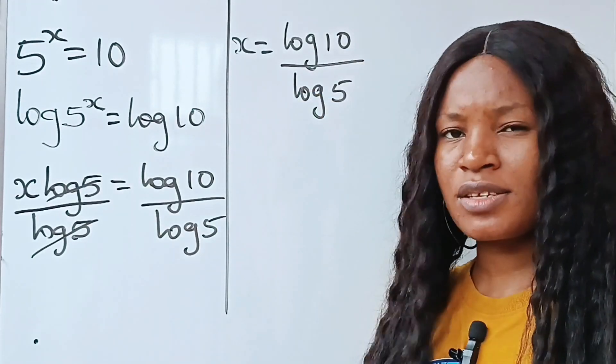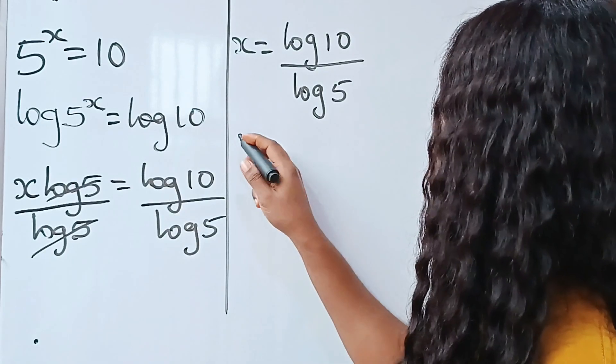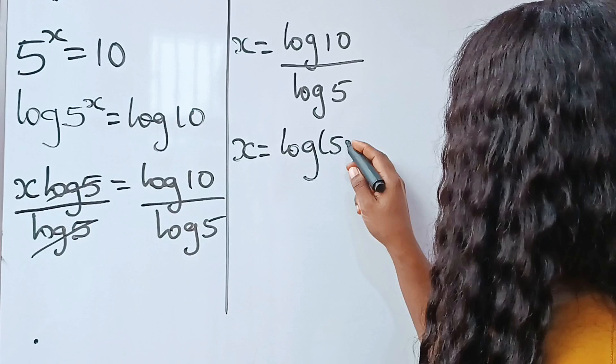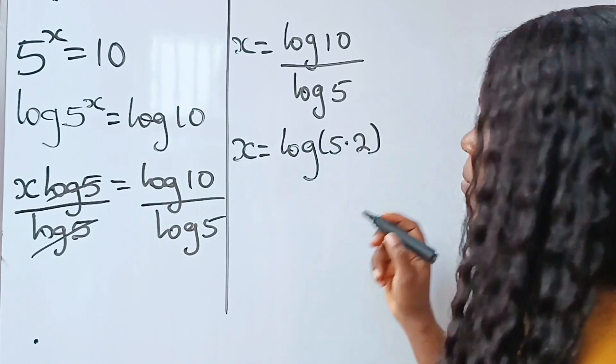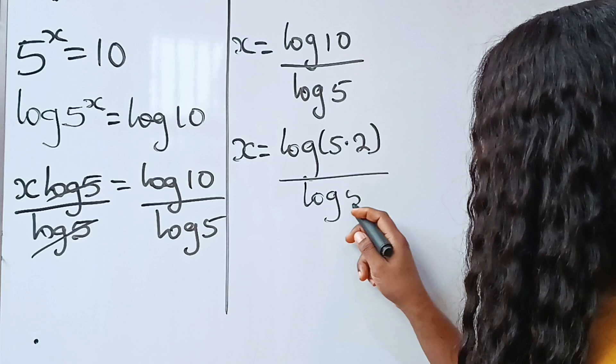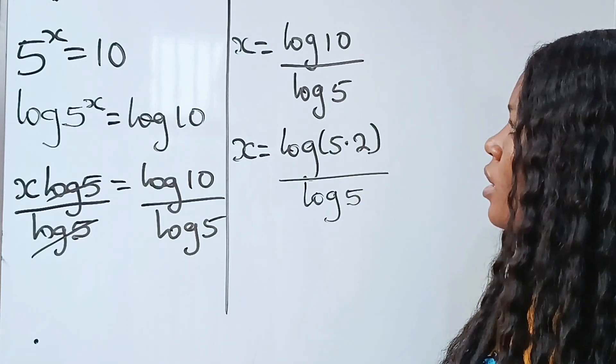But we can simplify this further. We can write this as x is equal to log of 5 multiplied by 2 divided by log 5.